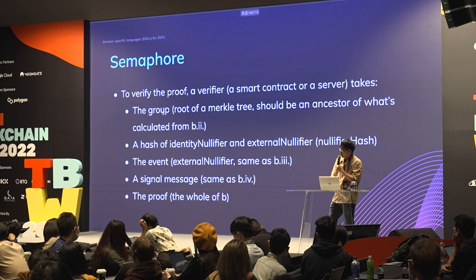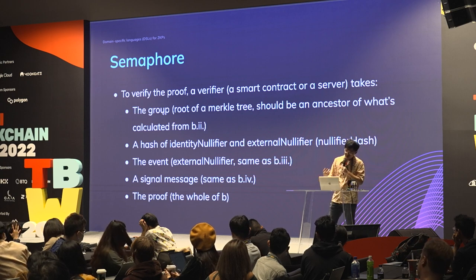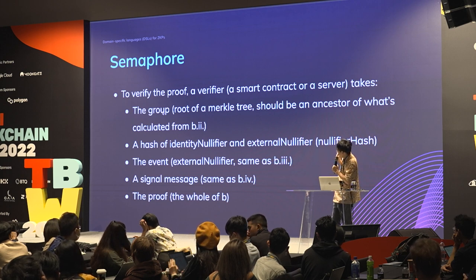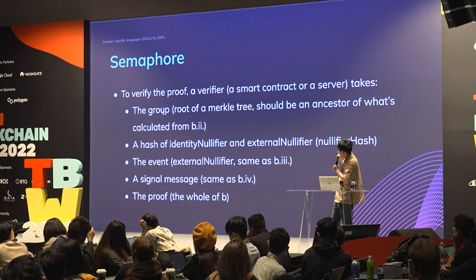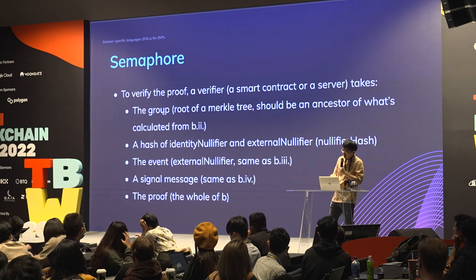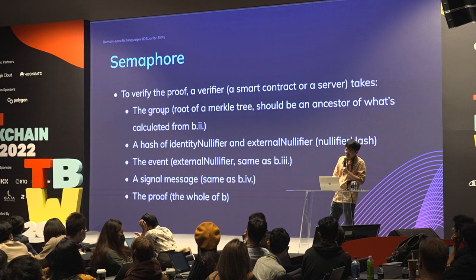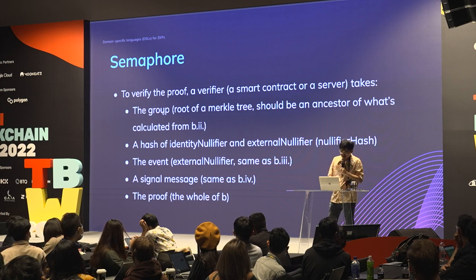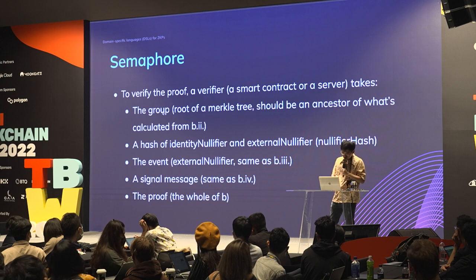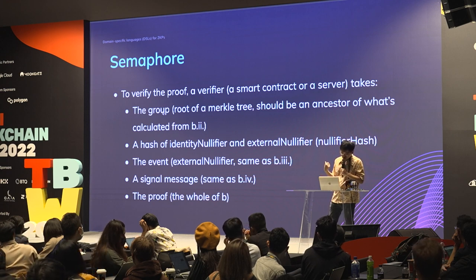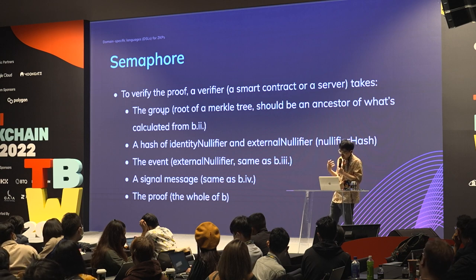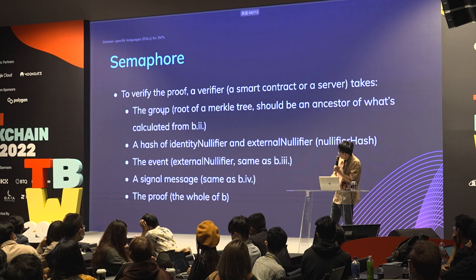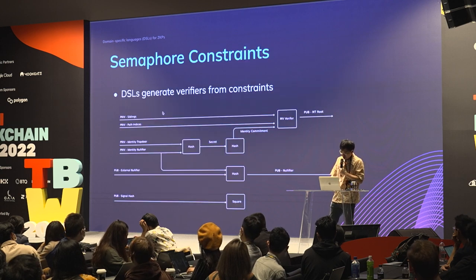As a verifier — for example a smart contract or server — you take the root of the tree where the user belongs, the hash of the user's identity and the external nullifier representing the event. The verifier stores this to check if the user has already sent the signal before, since the hash is unique. The verifier can verify the message was actually sent by the user by checking the whole proof.